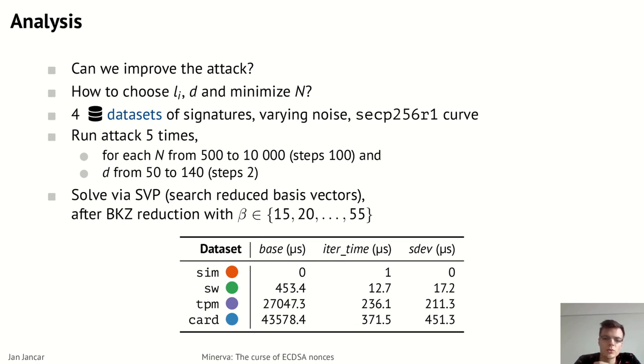To systematically evaluate previously known and new improvements to the basic attack, we used four datasets of measured signatures from the vulnerable implementations with varying noise. So the simulated dataset is a noise-free simulated dataset. The SW dataset is from the software library LibGCrypt. The TPM dataset is taken from the recent TPM fail paper and represents the measurements of the STM microcontroller's TPM chip. And finally the card dataset represents measurements from the Athena smart card.